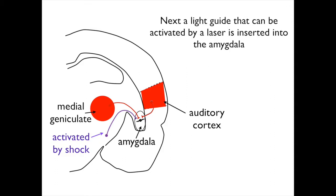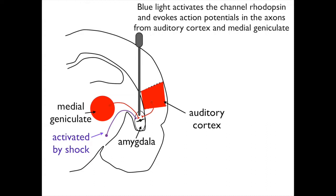Next, a light guide that can be activated by a laser is inserted into the amygdala. When the light guide is activated by blue light, it activates the channel rhodopsin and evokes action potentials in the axons from the auditory cortex and medial geniculate.